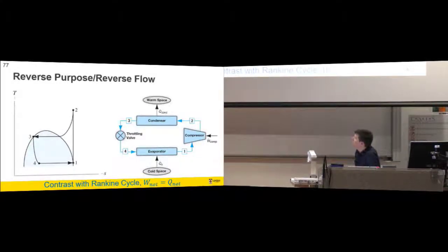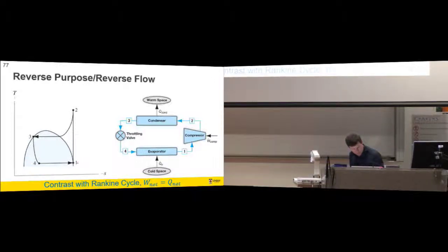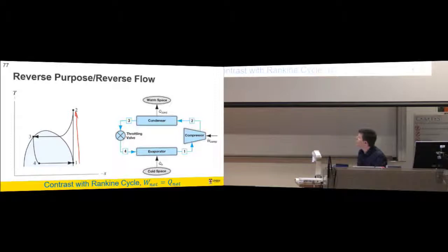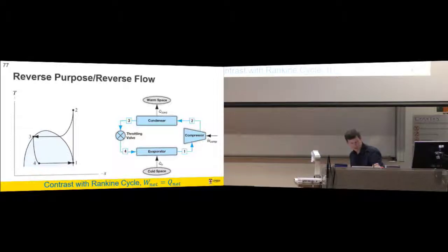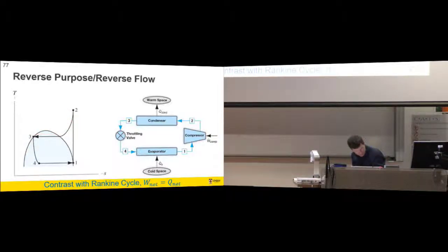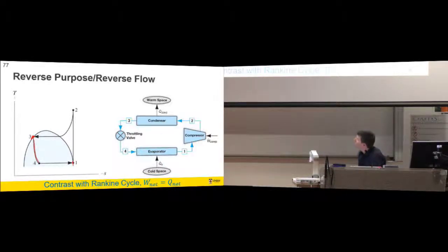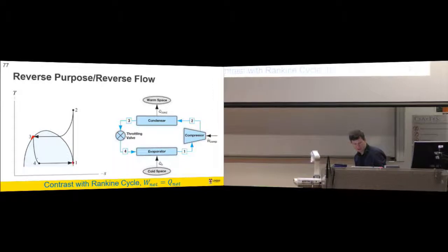With our TS diagram, we've got an ideal compressor which takes saturated vapor and compresses it up to state point 2. Then we need to draw heat out at constant pressure through the condenser, drawing it back down until it's condensed into a saturated liquid. So this point here is on the saturation curve, and this point here is on the saturation curve. Then our throttling valve maintains enthalpy but reduces pressure down to state point 4, and then we evaporate again through there.